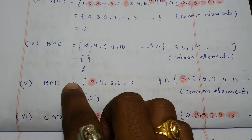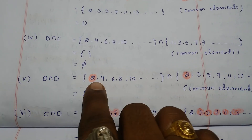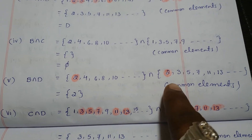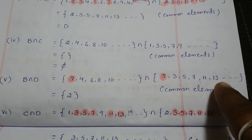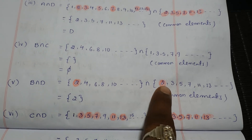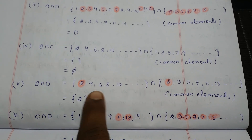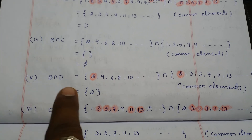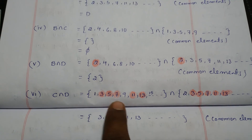Next, B intersection D. B is the set of even natural numbers: 2, 4, 6, 8, 10, and so on. D is the set of prime numbers: 2, 3, 5, 7, 11, 13, and so on. Only one element is common in both: 2, because 2 is an even prime number. So B intersection D is just {2}.